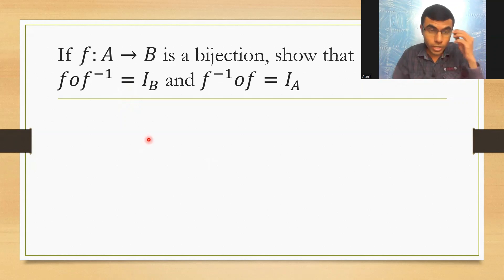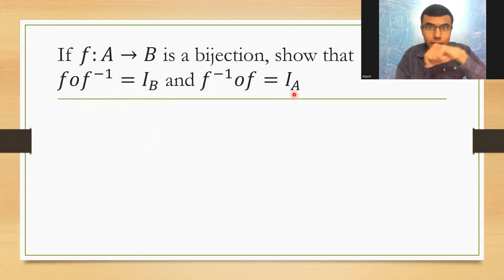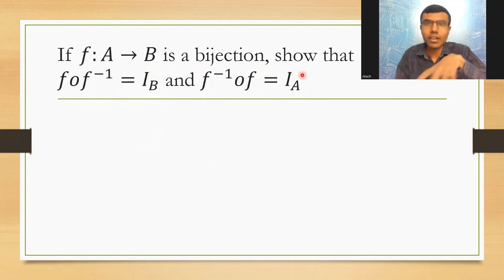Now let's see how to show that F∘F⁻¹ = I_B and F⁻¹∘F = I_A, given that F maps A to B is a bijection.